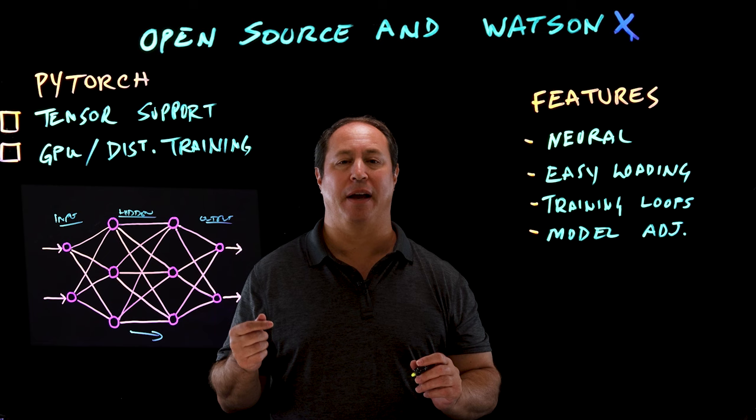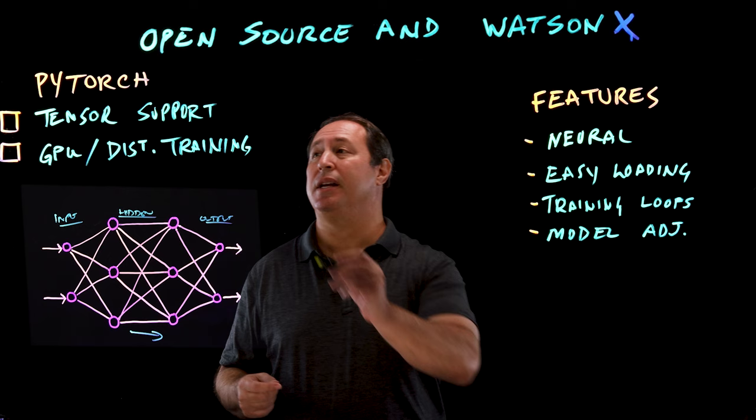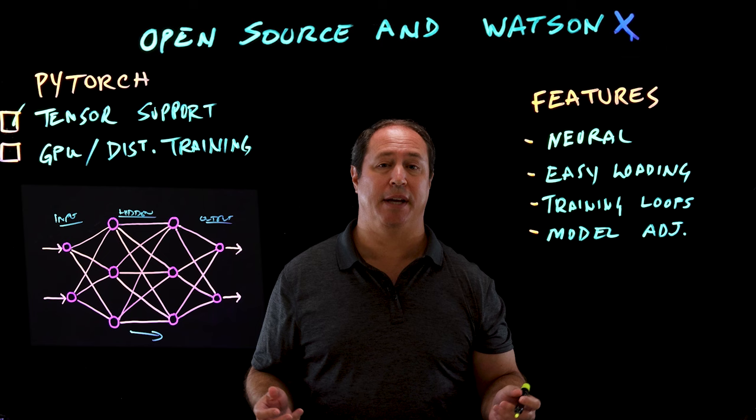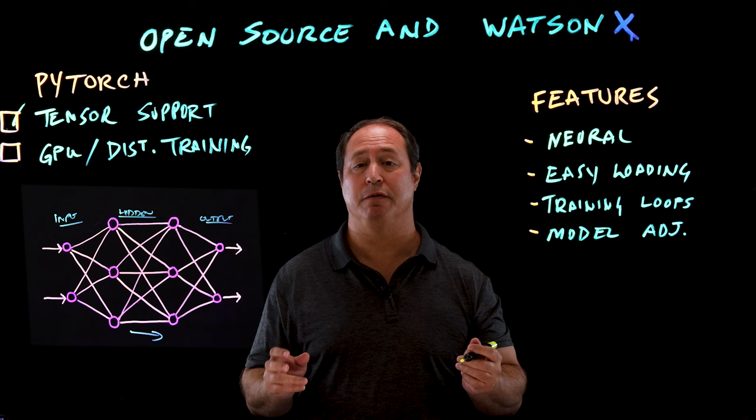We just looked at how we run model training and validation on a cluster, but now let's look at how we actually represent those models. The open source project we use to represent the models is PyTorch. PyTorch provides some key features for representing models, one of which is tensor support. A tensor is a huge multi-dimensional array that supports all those weighted values or probabilities in the model that we tweak over time to get the model to predict things correctly.